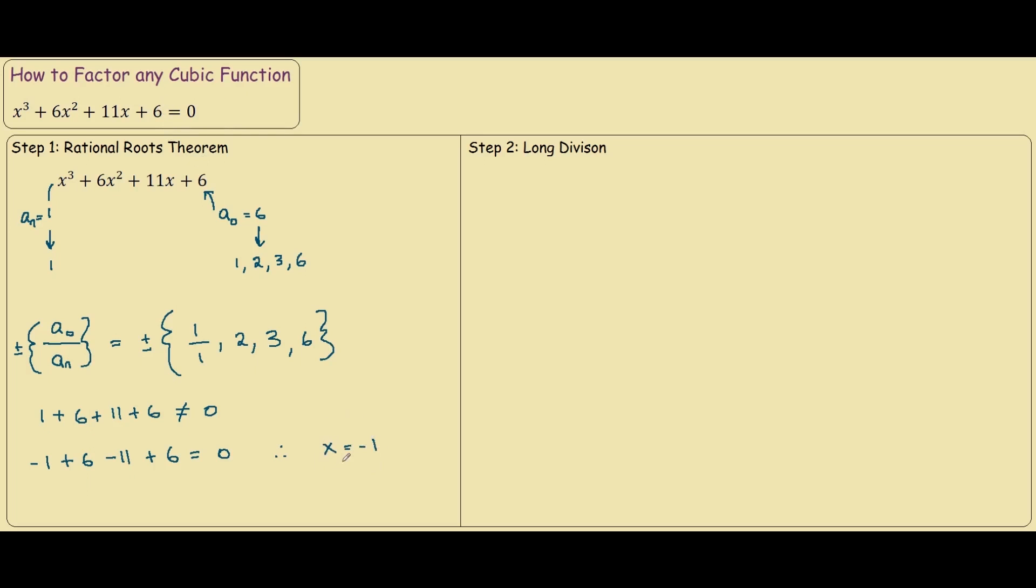x equals to negative 1 is the solution to our cubic function. So, if we rearrange this, we have x plus 1 equals to 0, and we found our first factor.